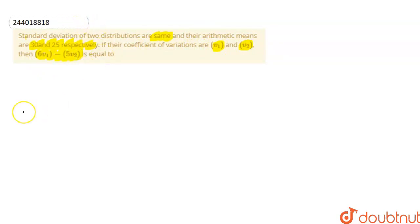First of all, we have the given data. The standard deviations of two distributions are the same, so the standard deviation of the first equals the standard deviation of the second.